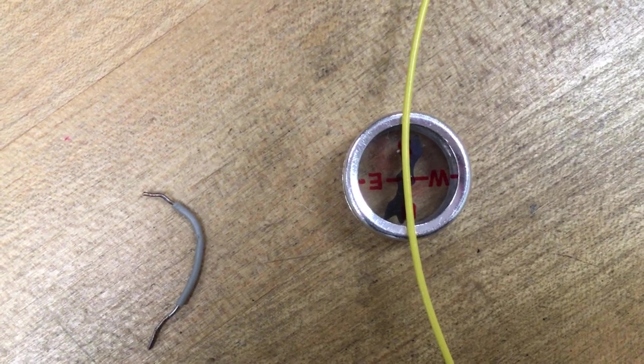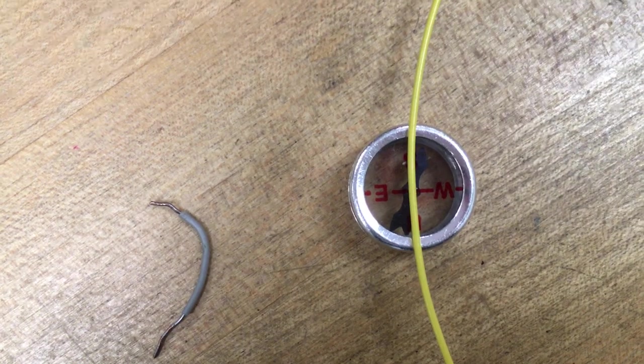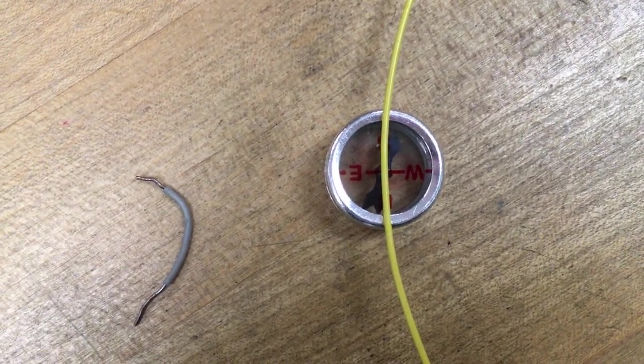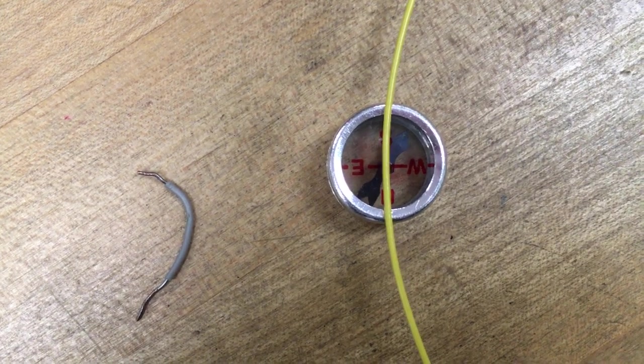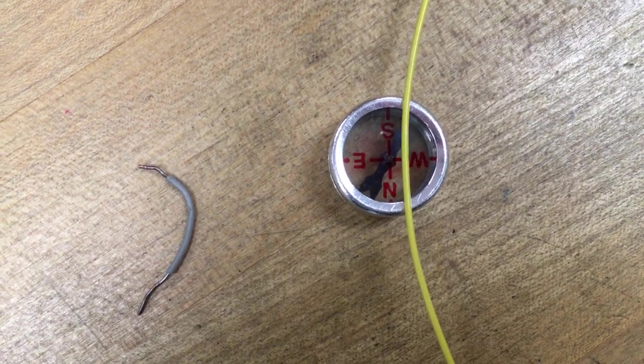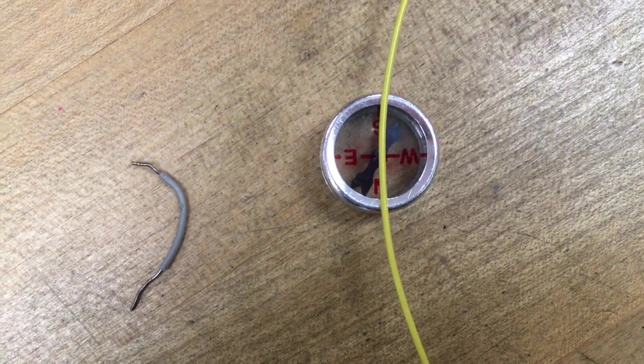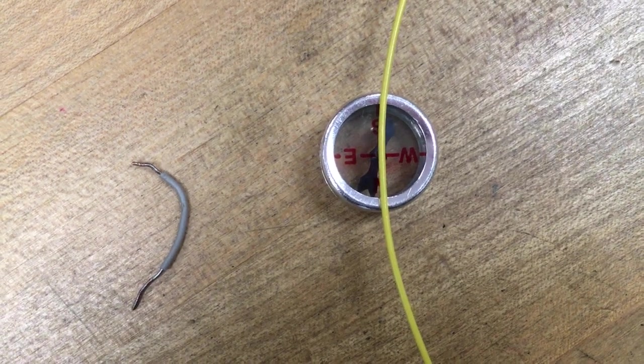So instead of deflecting to the left, it should deflect to the right. Because, remember, the field lines form circles around the conductor. So again, grab the switch. Operate it. Aha! There we go. To the right. Don't move the wire. And then, one more time. To the right. And off again.